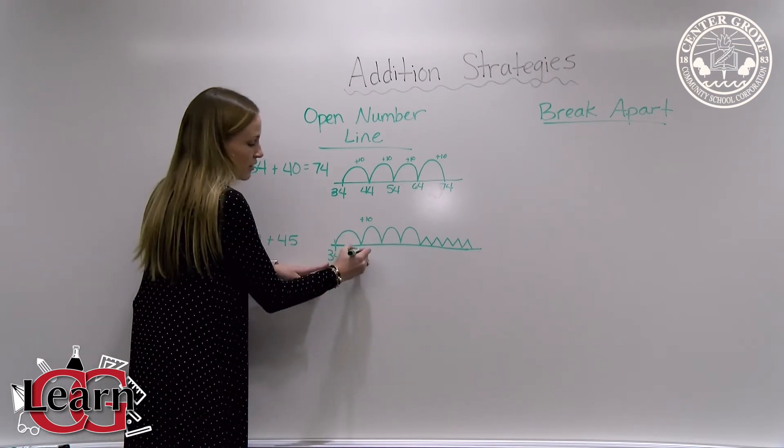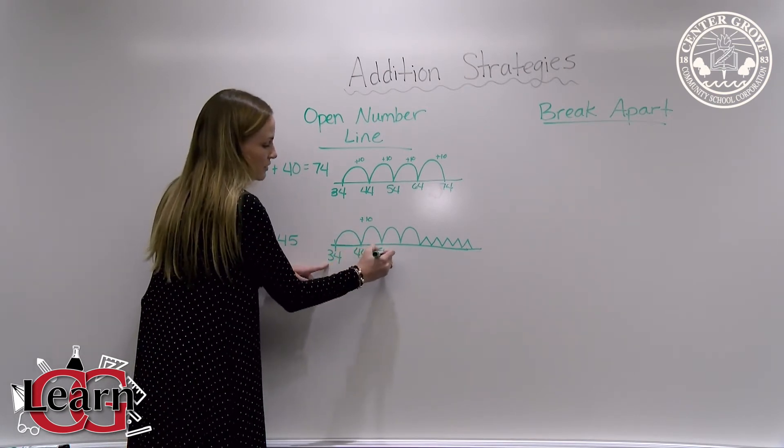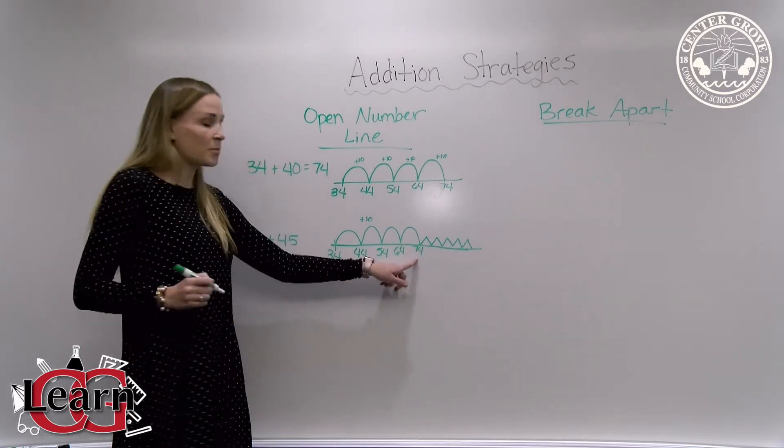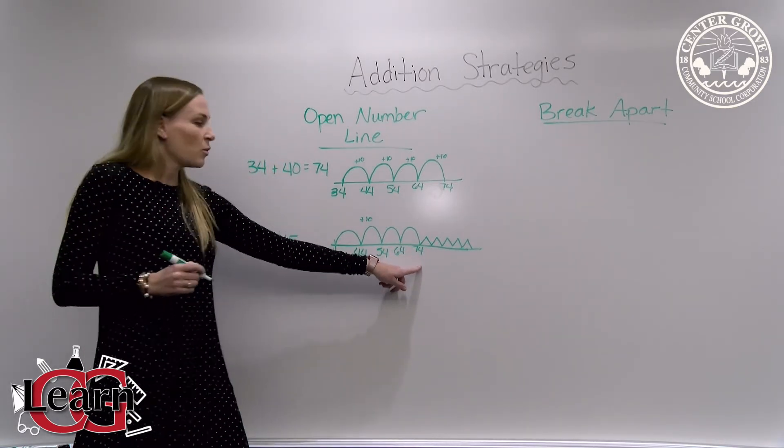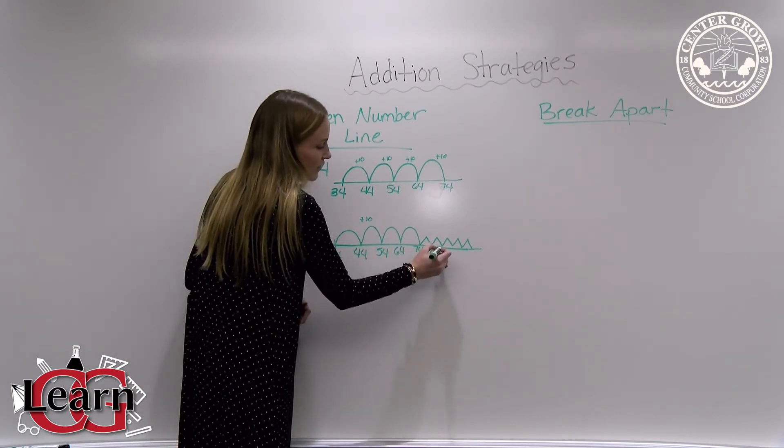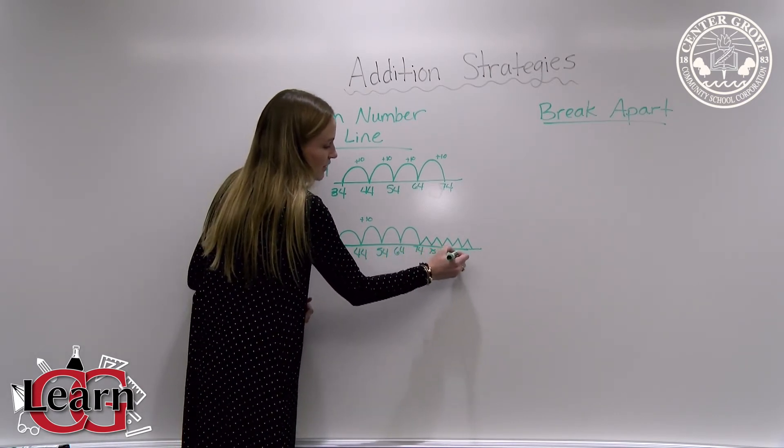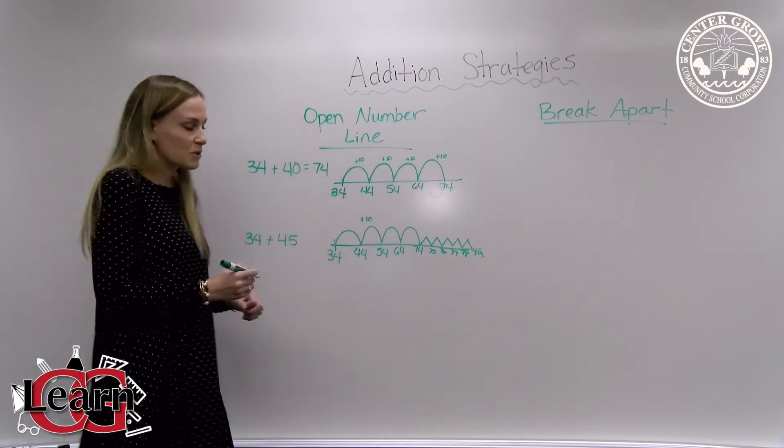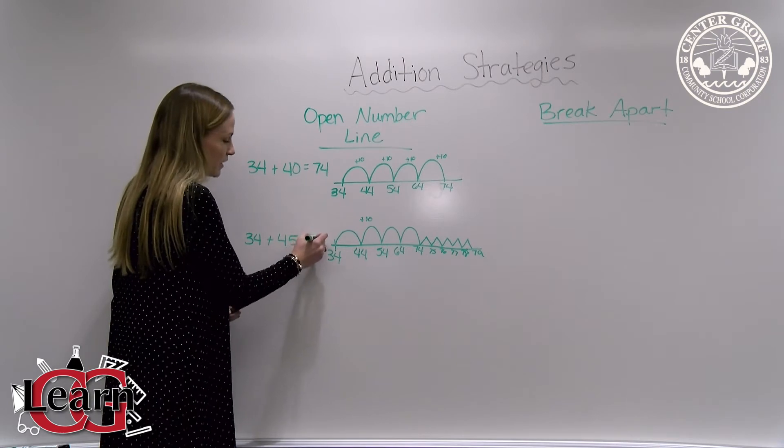So 34, 44, 54, 64, 74. And now I'm going to count on and add by ones. So 74, 75, 76, 77, 78, 79. So we know that our sum is 79.